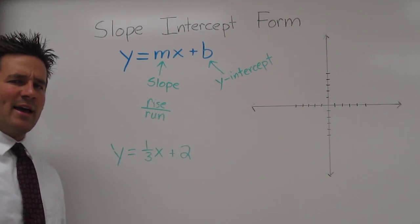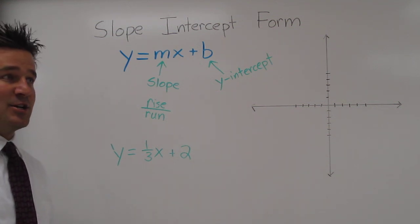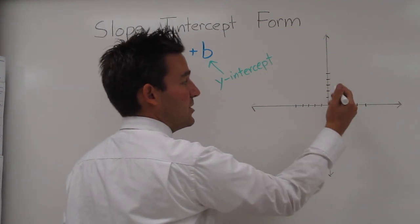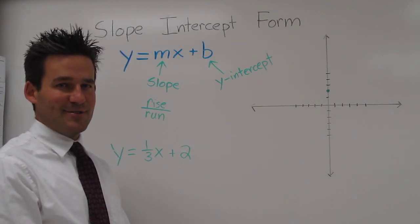Let's start with our y-intercept, or where the line crosses the y-axis. If it crosses at 2, that's right here. Here's 0, 1, 2. So we know our line crosses the y-axis at positive 2.